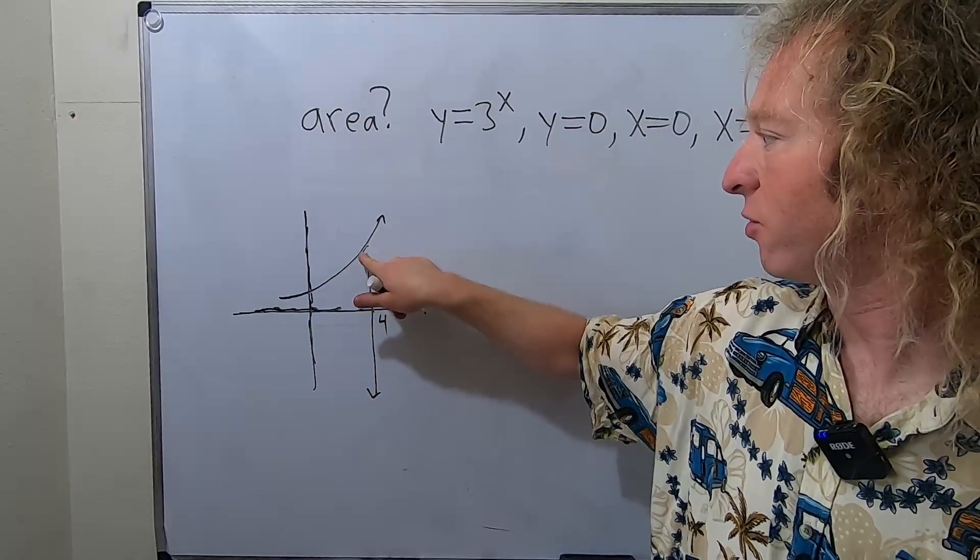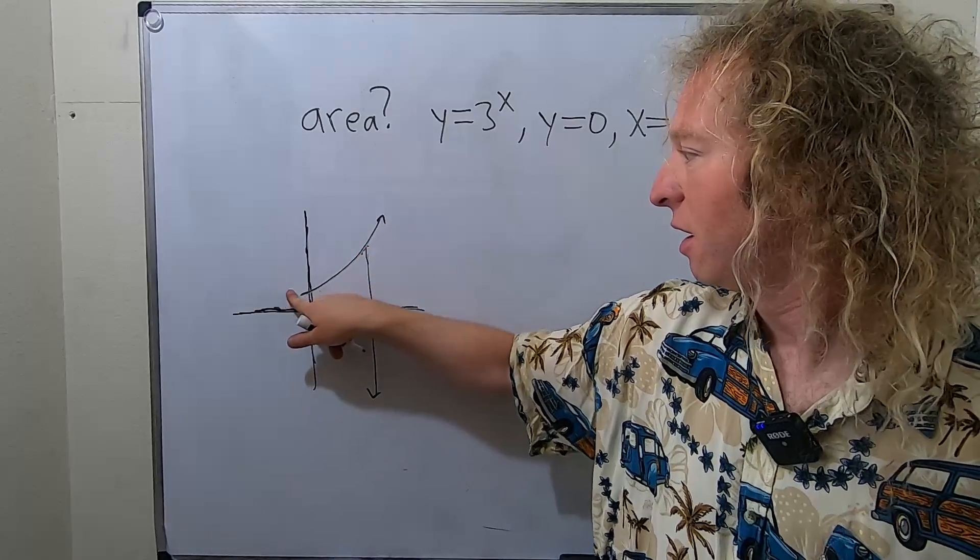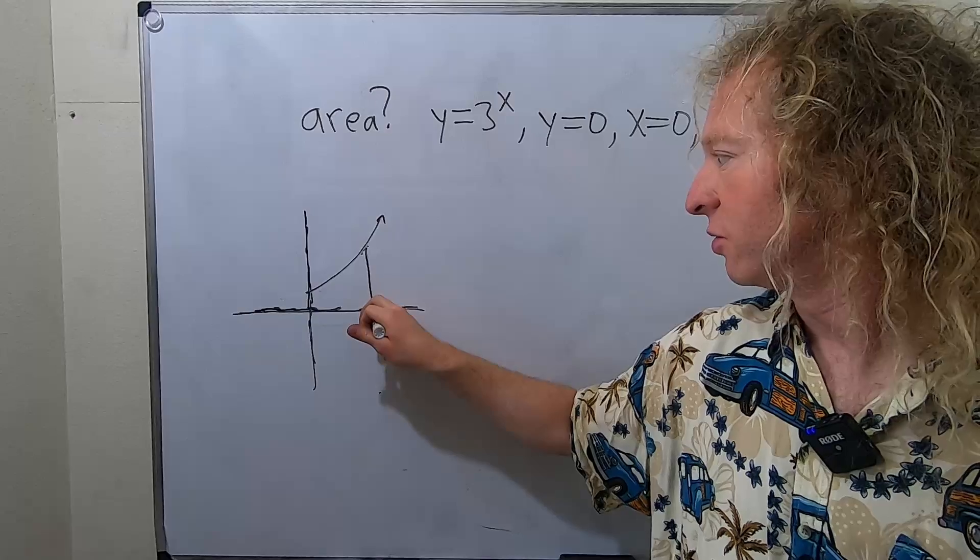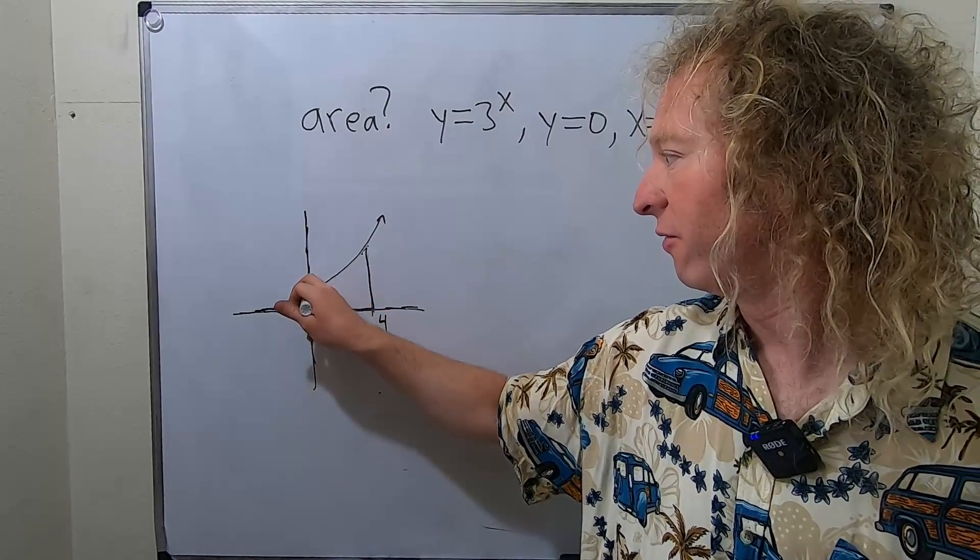So now you can see where the graphs intersect. It would be something like this. This would be your region right here. So the goal is to find the area of this region.